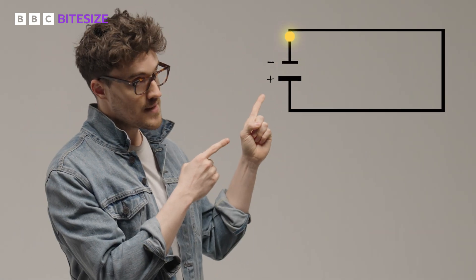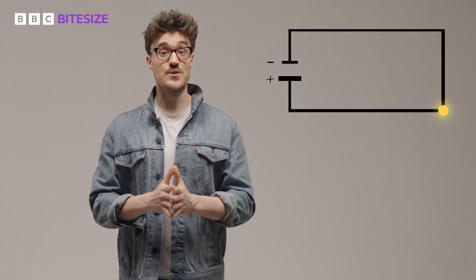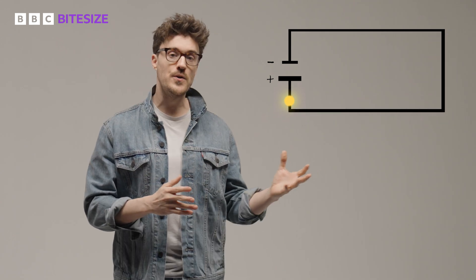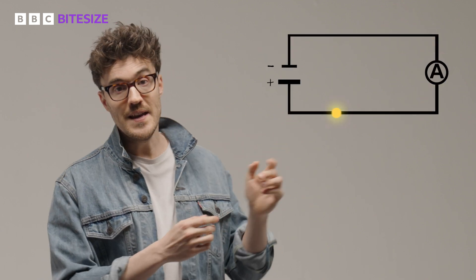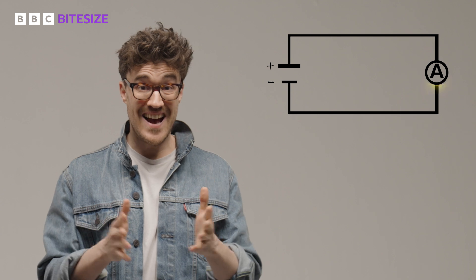A direct current is when the electrons just flow in one direction around a circuit. In a direct current, the electric current will move from negative on your battery or cell to positive. An alternating current, on the other hand, is a current where the direction of the electron flow continually reverses. The easiest way to remember the difference is through their names: direct current takes one direct route and does not change direction, while an alternating current alternates in direction.